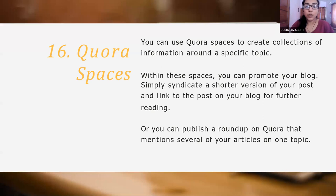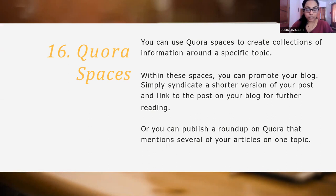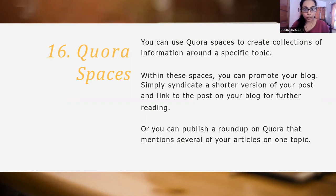Then there's something called Quora spaces. Here you use Quora spaces to create collections of information around a specific topic. Within these spaces, we can promote our blog, but here we need to simply syndicate a shorter version of your post and link, just as we did in the answer part. You can also publish a roundup on Quora that mentions several of your articles on one topic — if you have a lot of articles on your blog, you can publish all of those articles as a roundup.